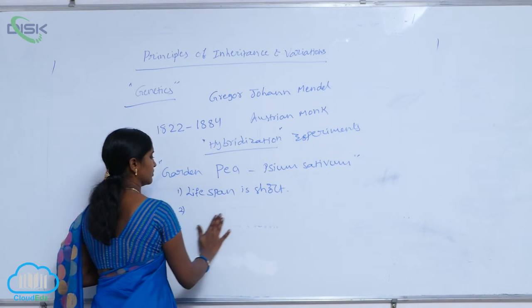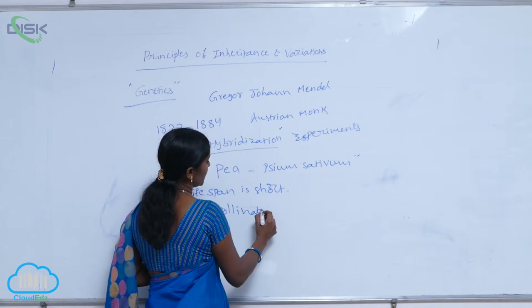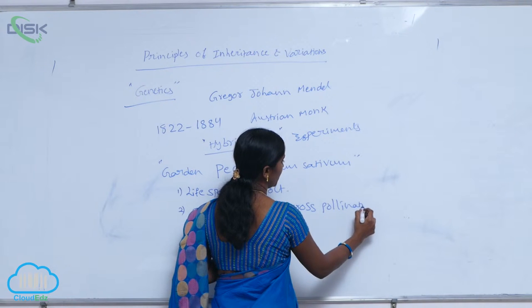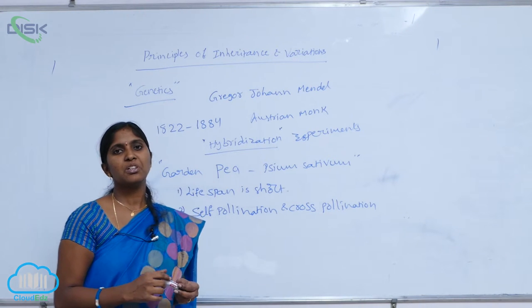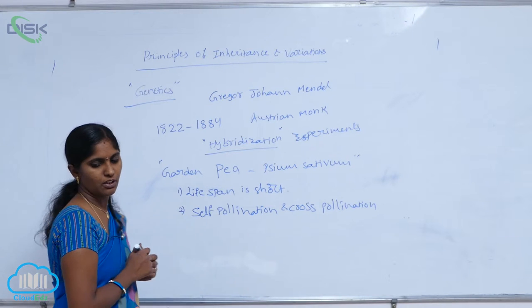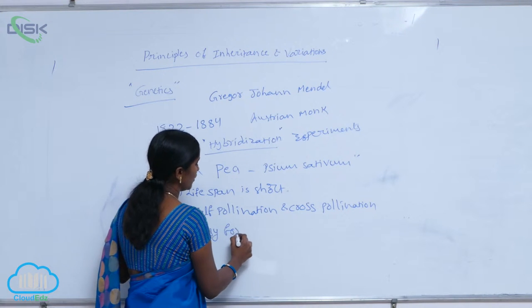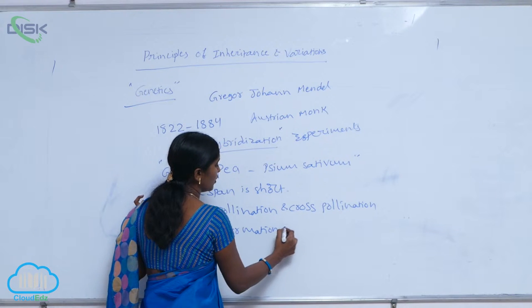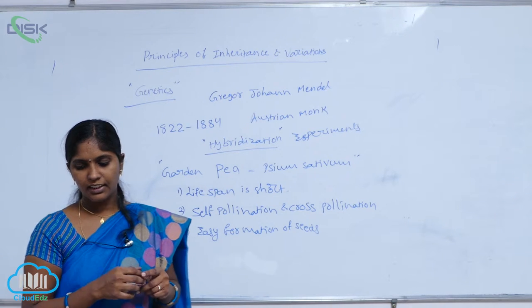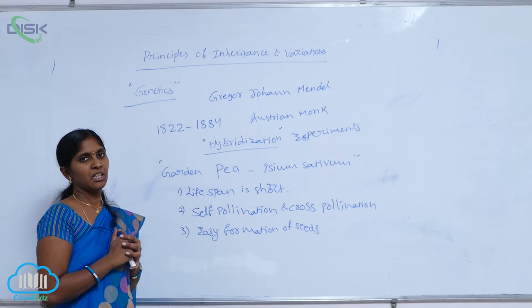The pea plant favours both self-pollination and cross-pollination. It also allows easy formation of seeds. Based on these unique characters - short life span, favour for self and cross pollination, and easy seed formation - Mendel selected the garden pea plant for his hybridization experiment. He spent a total of 8 years on his experiment, of which 2 years were spent on pure line production.